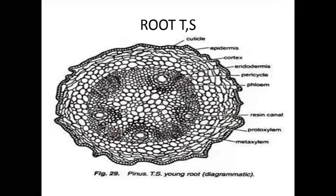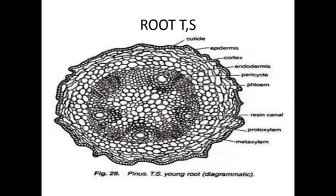The epidermis is made by rectangular parenchyma cells. It protects the inner parts and gives a perfect shape to the root. The epidermis of the root is covered by a thick cuticle.